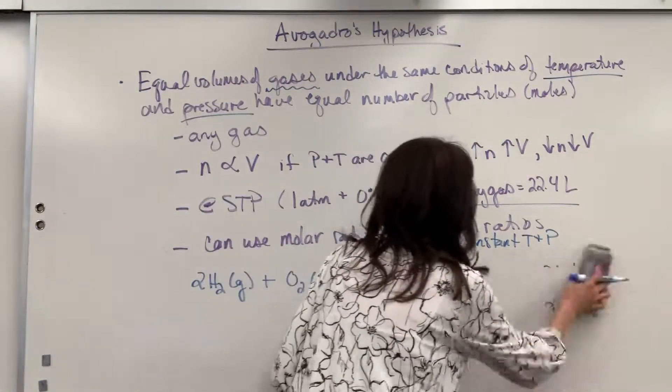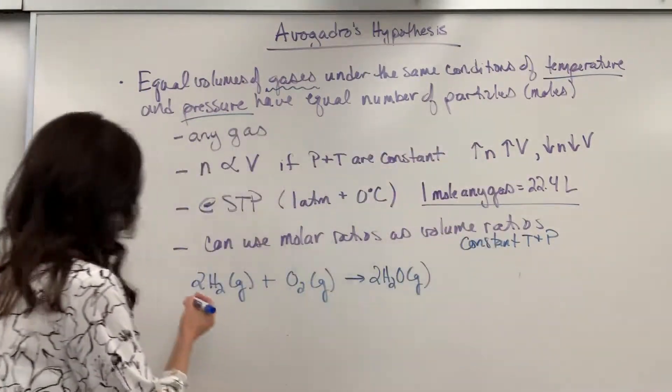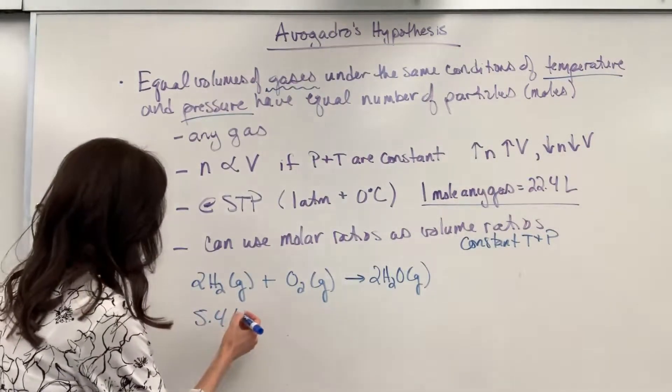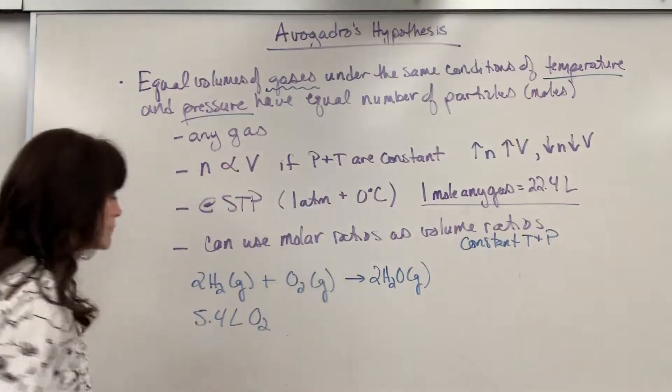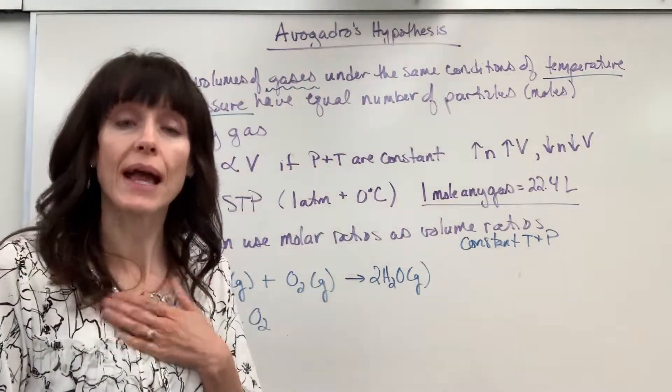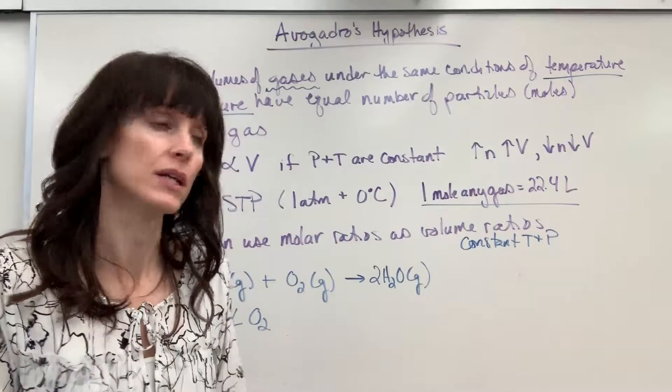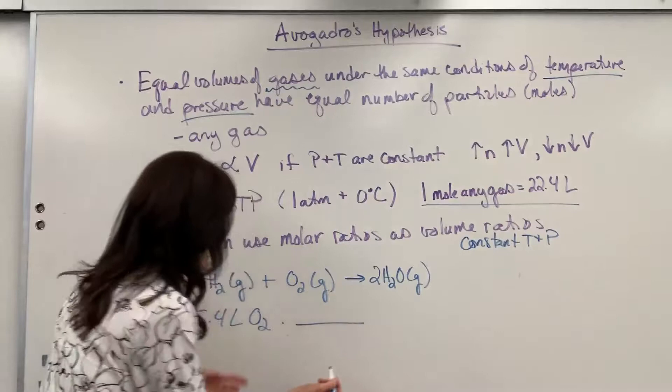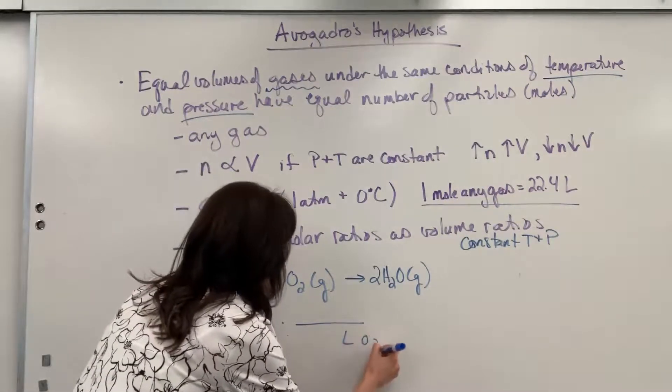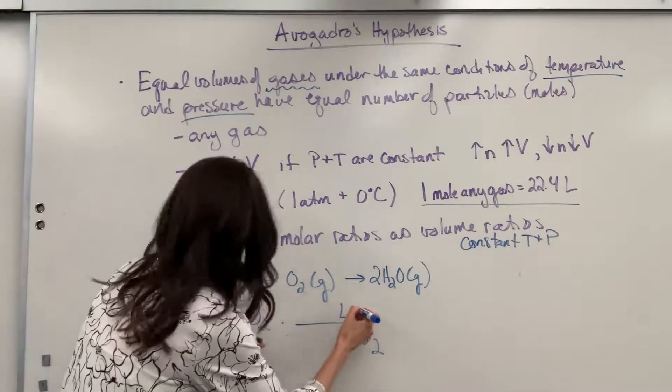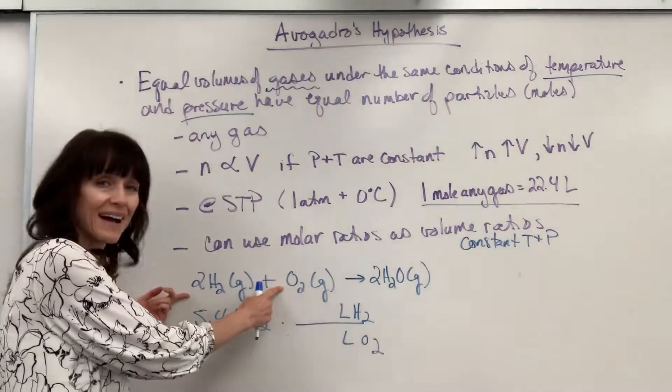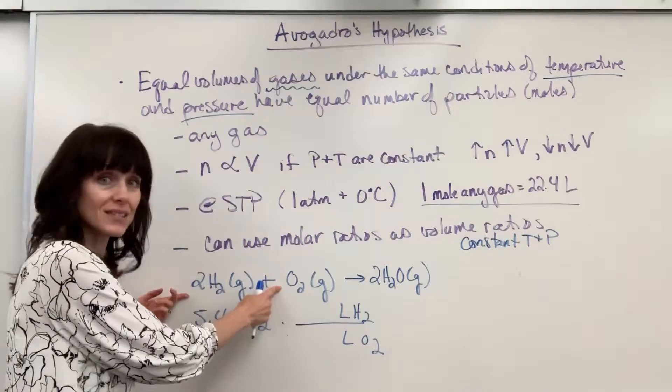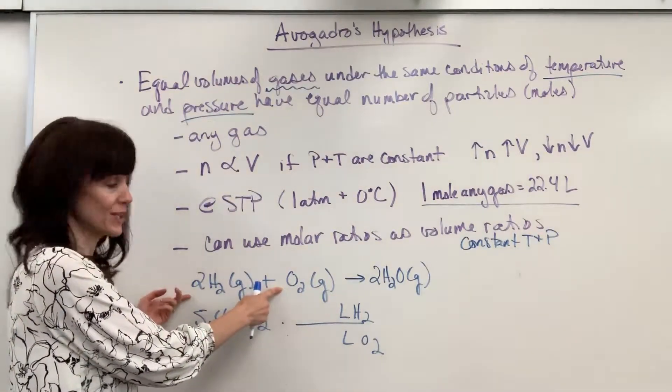Let's say that I have 5.4 liters of oxygen. 5.4 liters of oxygen. And I'm wondering, how many liters of hydrogen do I need to completely react with that oxygen? Okay. Well, I want to get rid of the liters of oxygen and end with the liters of hydrogen. I can just attach the molar ratios because they're gases at constant temperature and pressure. They're also volume ratios.